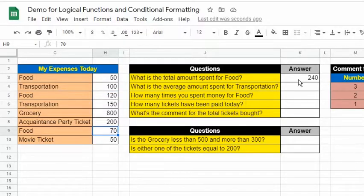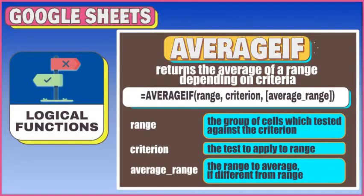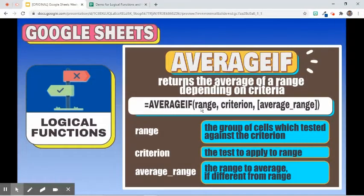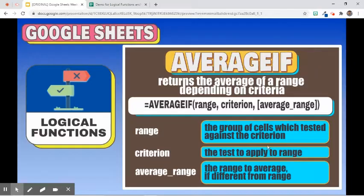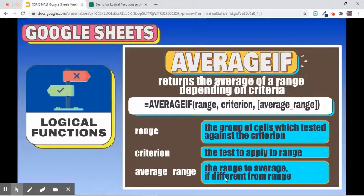The next function is AVERAGEIF. It returns the average of a range depending on criteria. Its syntax is: =AVERAGEIF(range, criterion, average_range). The first argument is the range tested against the criterion. The second argument is the criterion, and the third argument is the range where the values to average are found. This is optional if the range is similar to the first argument.